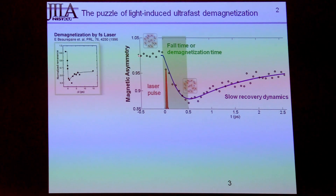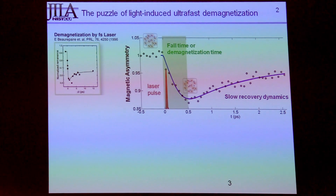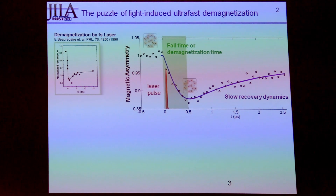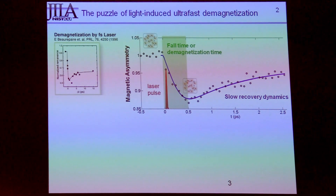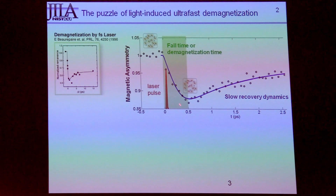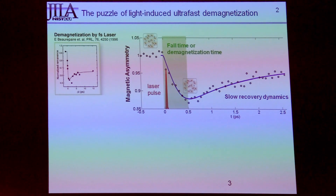The idea is: you basically have your magnetic signal, and then you hit it with a very short laser pulse, and the material responds. At first, the surprise was that the material could actually respond so quickly, because everybody said that magnetization dynamics are slower — there's no way you can change the magnetization that fast. But they were wrong. In about 500 femtoseconds, you can actually completely destroy the magnetic order. But now we're asking: why is it so slow? The laser pulse comes in the first 20 femtoseconds, but the material responds 500 femtoseconds later. We don't understand the process, so we want to know if we can speed it up.